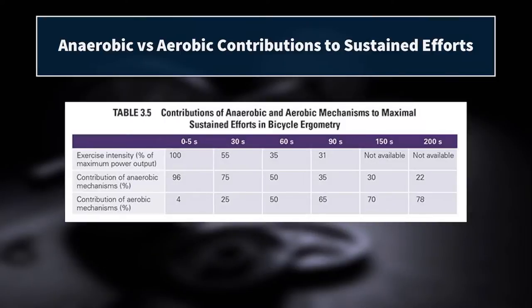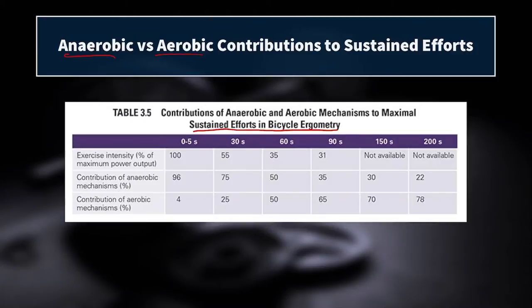The first thing to consider is the percent contribution from the anaerobic and aerobic systems during sustained efforts. This will help to inform the way that we program intervals and durations of efforts for our athletes. This data is during sustained efforts in bicycle ergometry, so when you apply these numbers to other modes of exercise it might not be a one-to-one correlation, but it'll be pretty close.